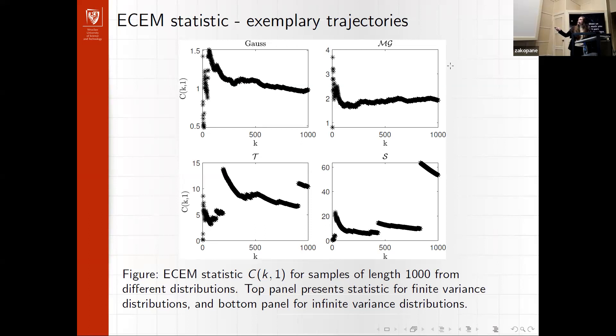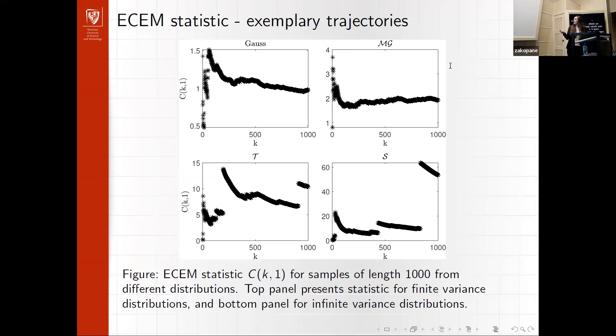We select the last slope of the segment using linear regression, so we obtain the slope of this last segment. And we denote this parametrization as A_m. This is a simple flowchart presenting how to obtain this parametrization.